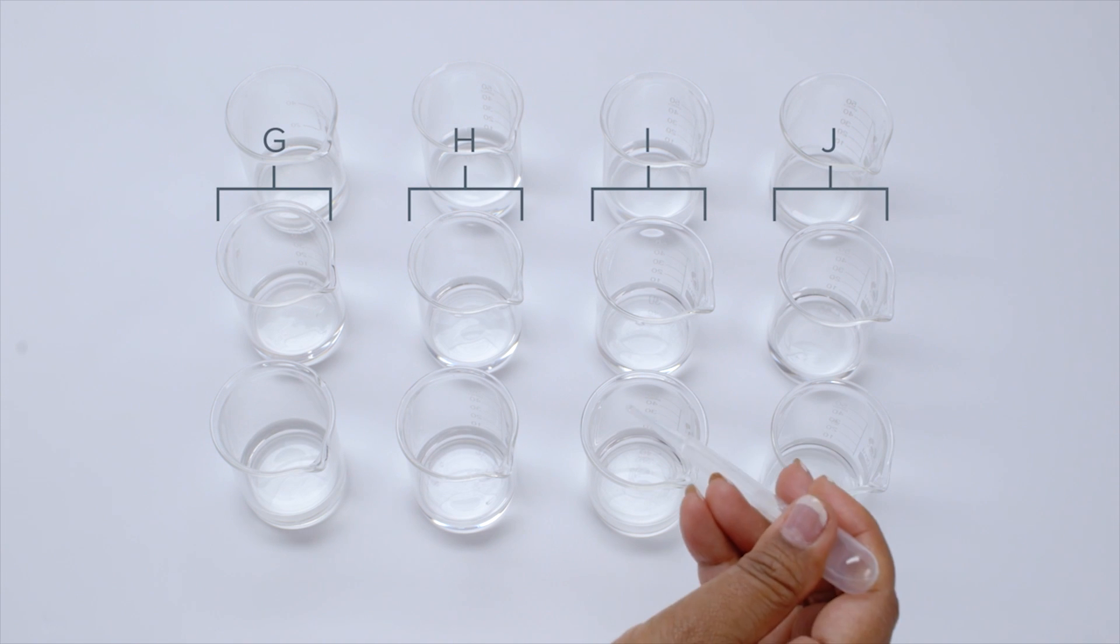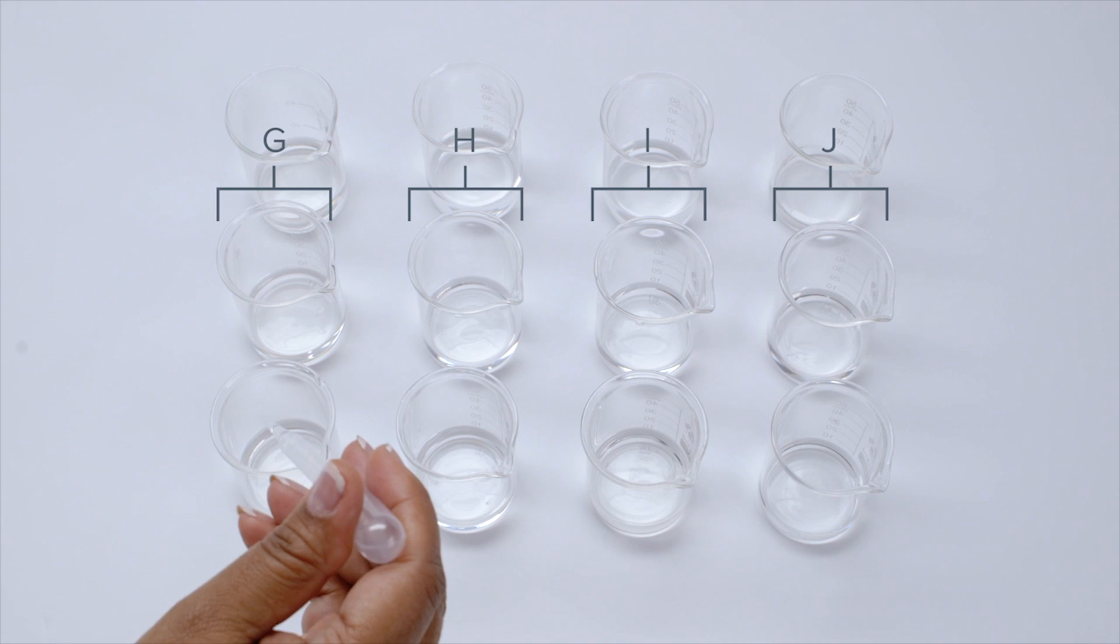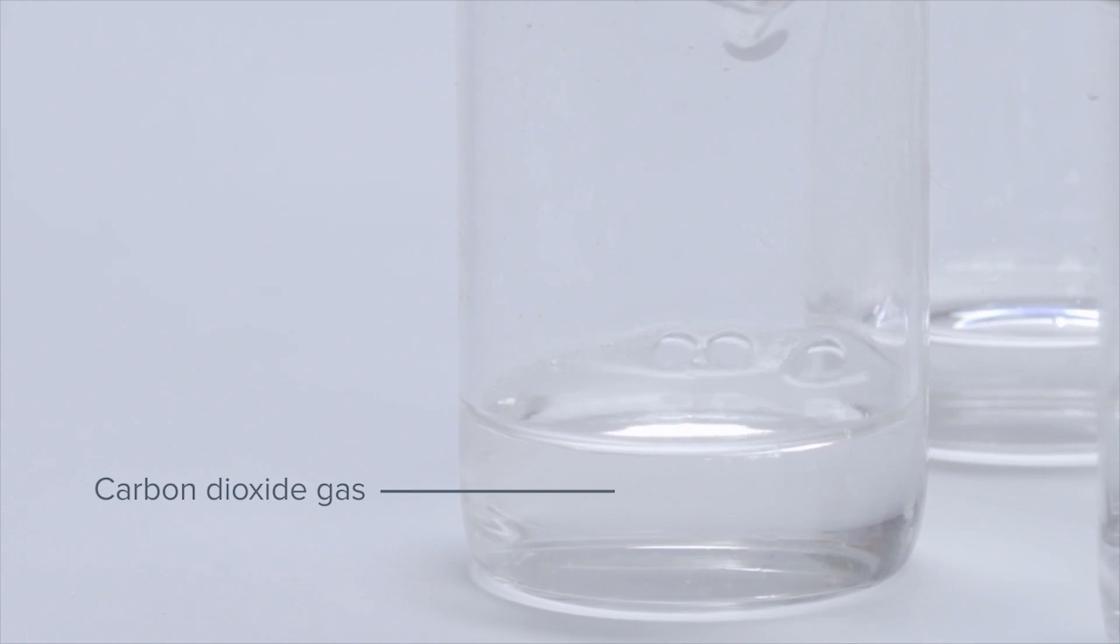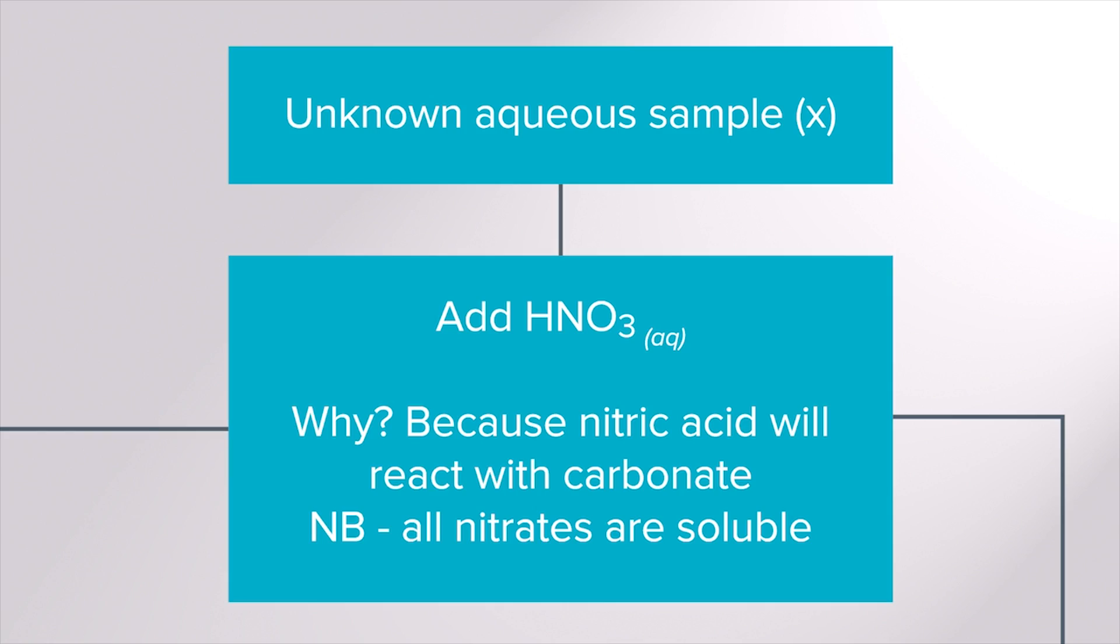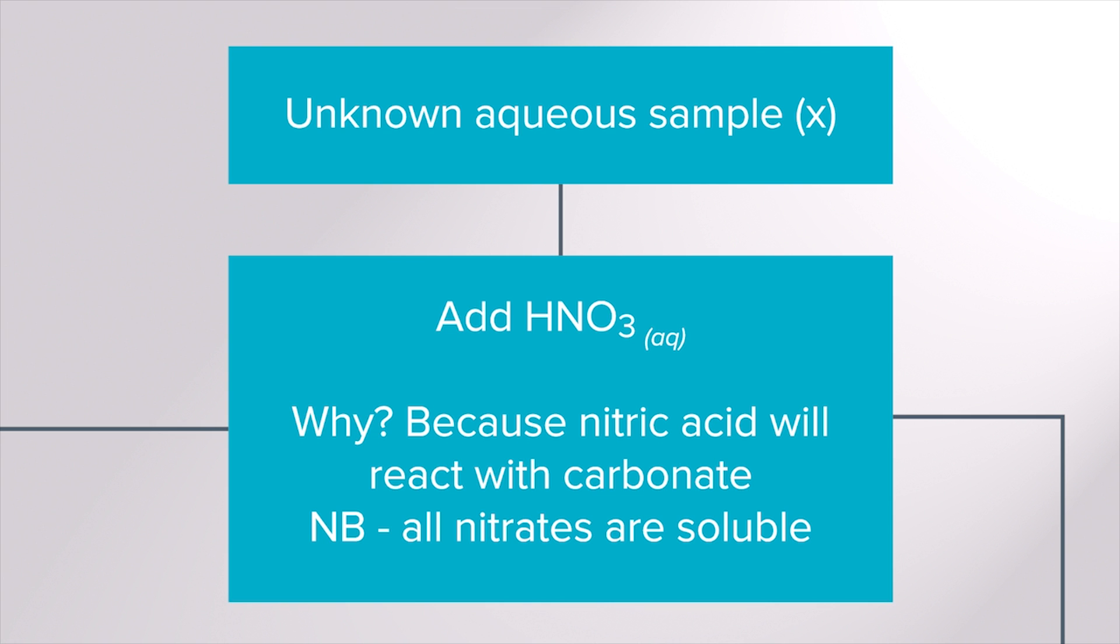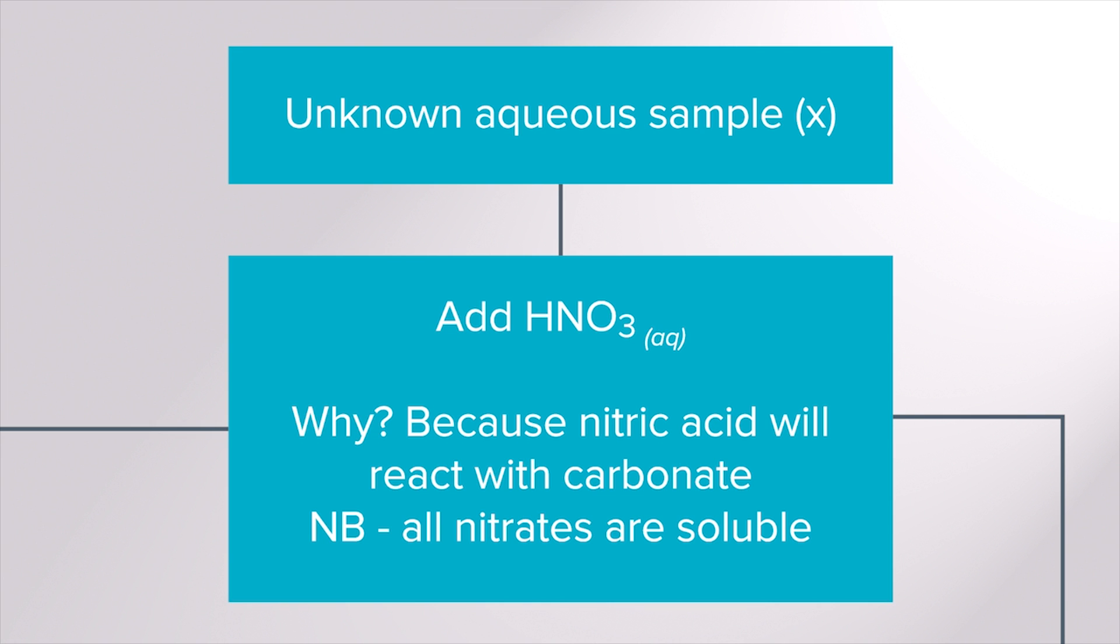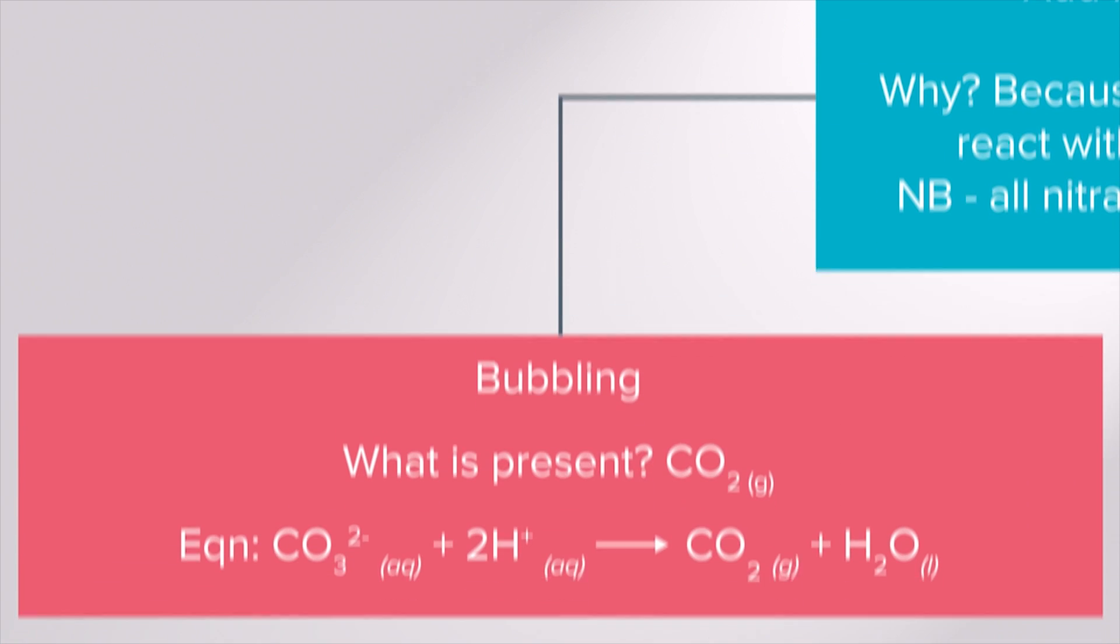First nitric acid should be added to our sample. If bubbling is observed this is due to carbon dioxide gas being produced which means carbonate ions are present. Nitric acid is used so that the nitrate ions do not interfere with the testing. All nitrates are soluble. Carbonate ions react with the hydrogen ions in the acid to form carbon dioxide gas and water.